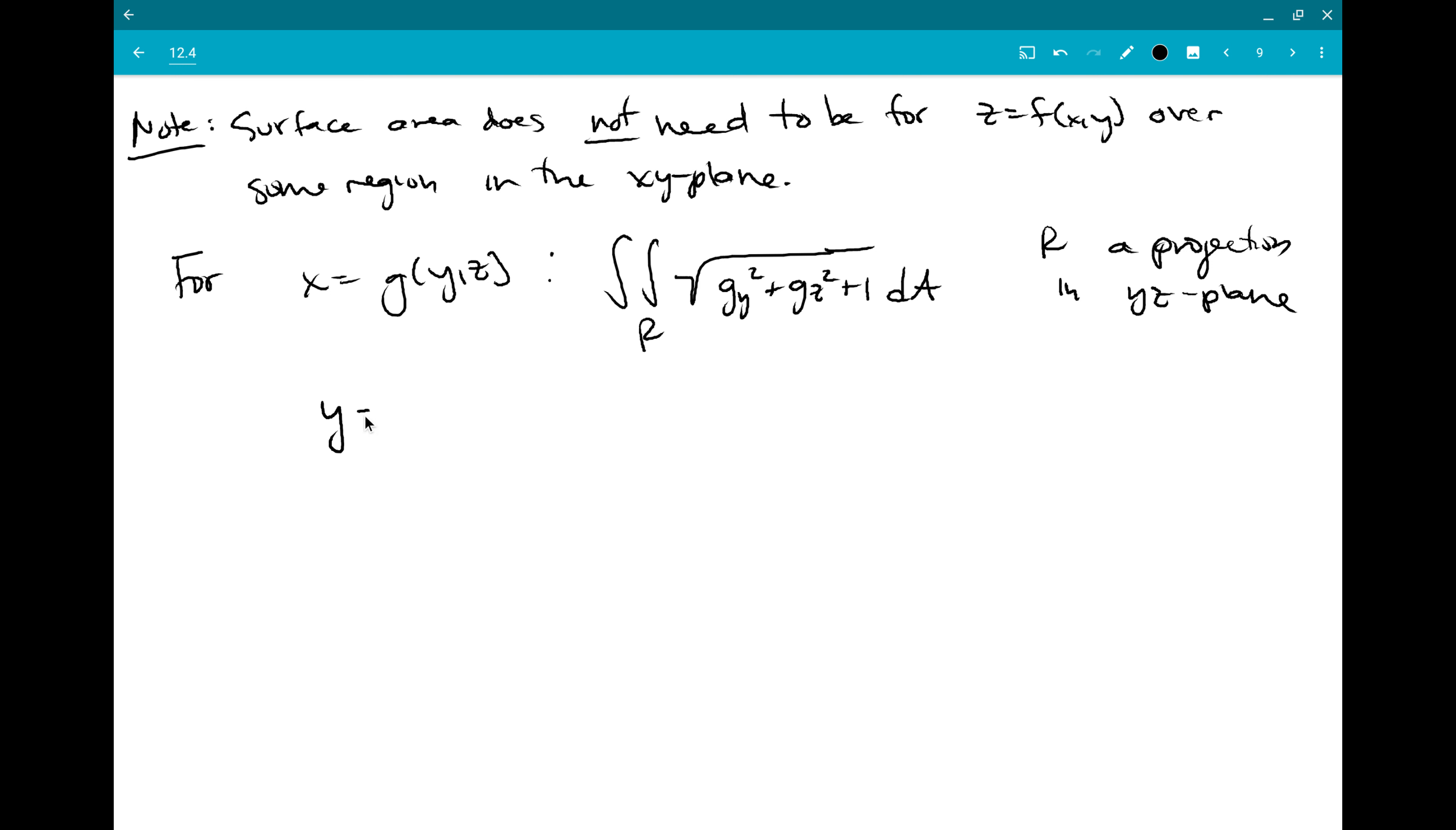Or for y equal to h of xz we could do the same thing and integrate over the region R the square root of h sub x squared plus h sub z squared plus one dA for R, a projection in the xz plane.